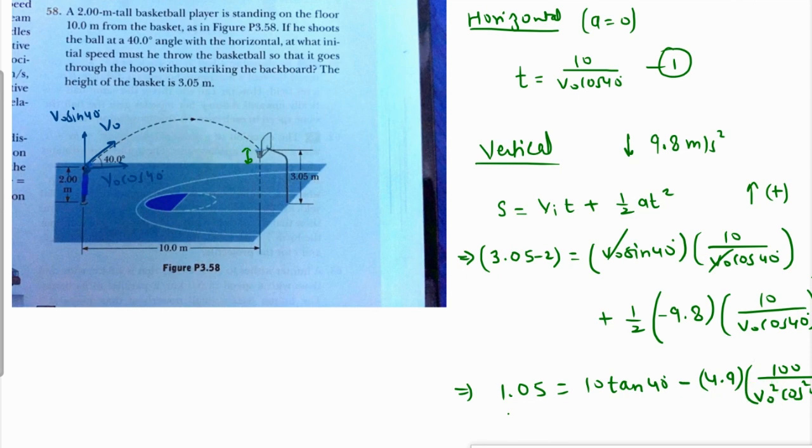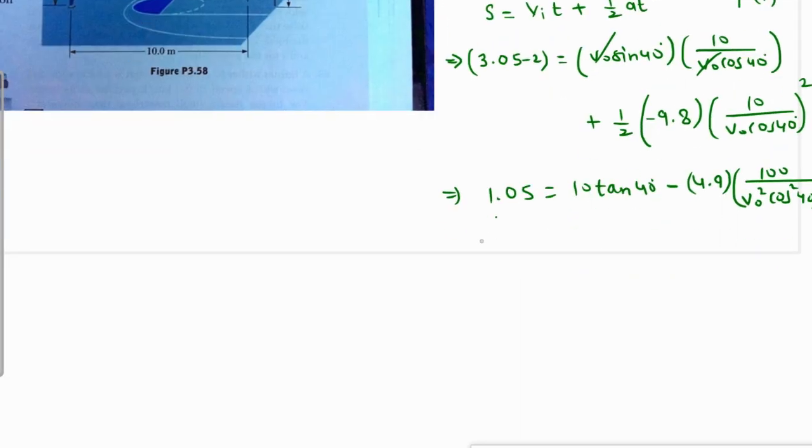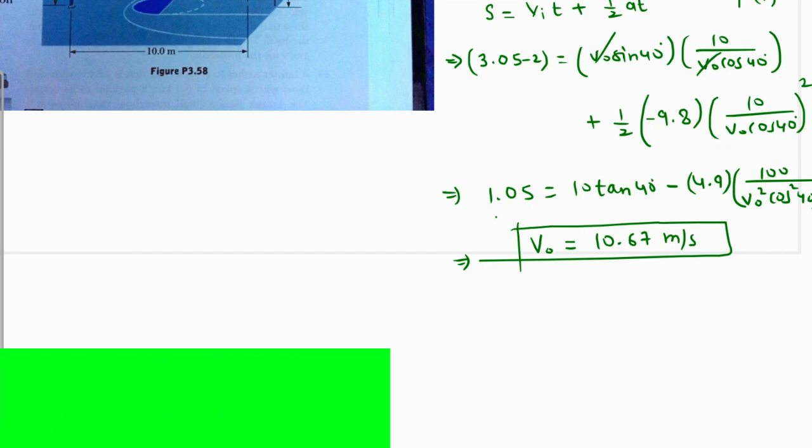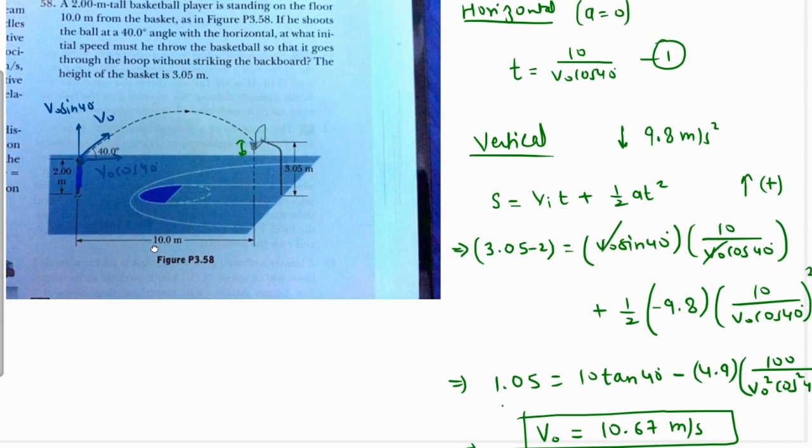That's where the calculator comes in. So if we use the calculator, the value of v naught comes out as 10.67 meters per second. This will be the minimum velocity with which it should be thrown so that it just passes through the hoop and baskets the ball. This is the final answer.